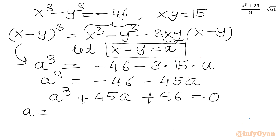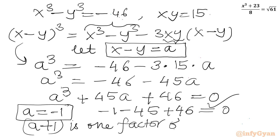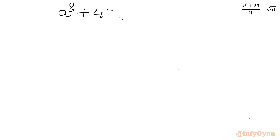To solve this cubic, let me try a = −1: (−1)³ + 45(−1) + 46 = −1 − 45 + 46 = 0. So a = −1 is a root. By the remainder theorem, (a + 1) is a factor of a³ + 45a + 46.